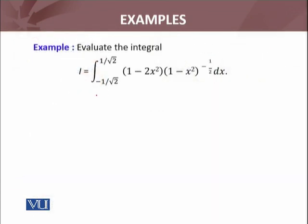Evaluate the integral I, where the lower limit alpha is minus 1 over square root of 2, and the upper limit beta is 1 over square root of 2. This is your f of x, which is: (1 minus 2x squared) times (1 minus x squared) raised to the power minus 1 by 2, dx.